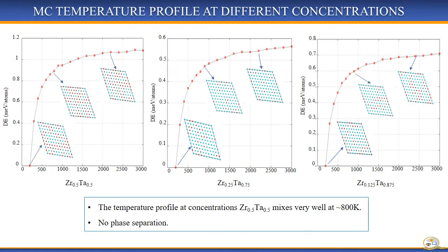The Monte Carlo temperature profile was calculated to evaluate the phase stability of the system as a function of temperature, at concentrations corresponding to the most stable structures generated by cluster expansion. Here is the temperature profile at 50 percent zirconium and 50 percent Tantalum, and here at 25 percent zirconium and 75 percent Tantalum.